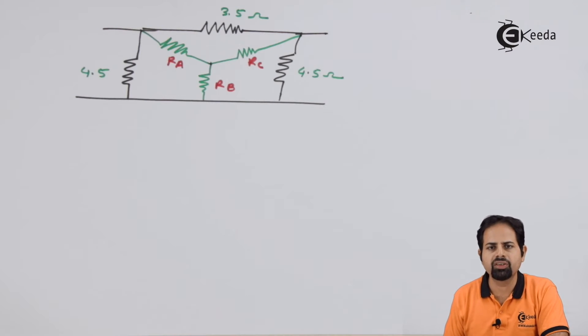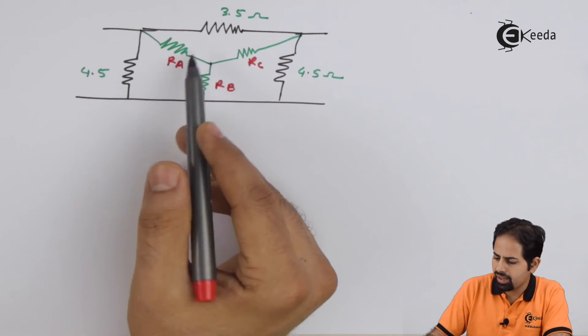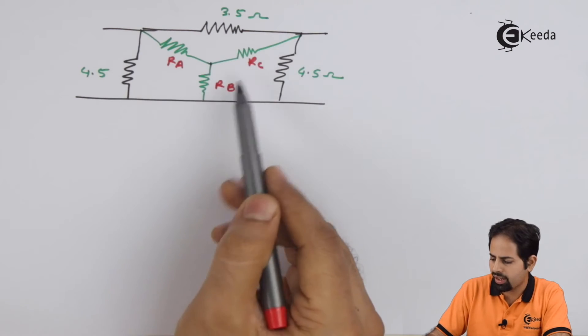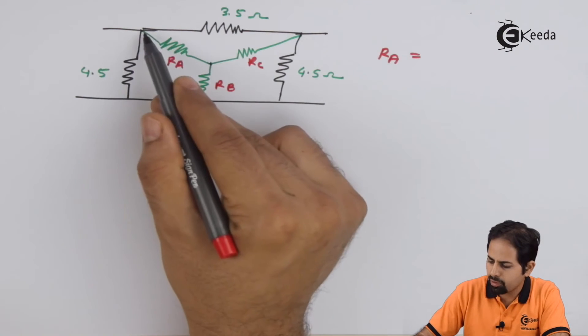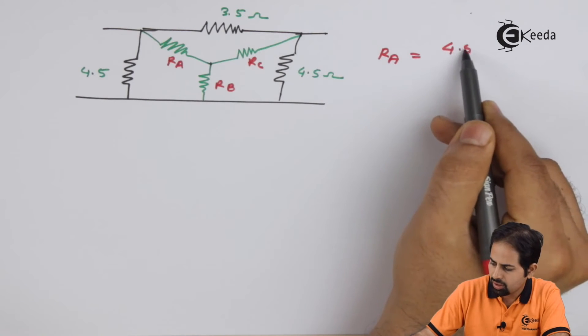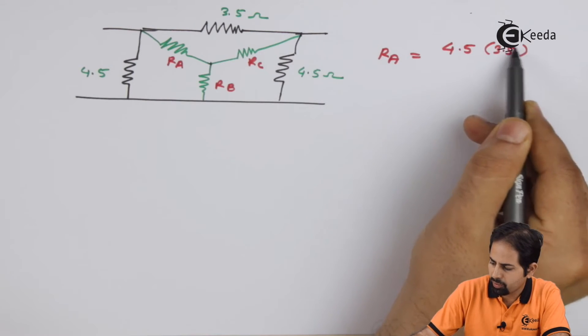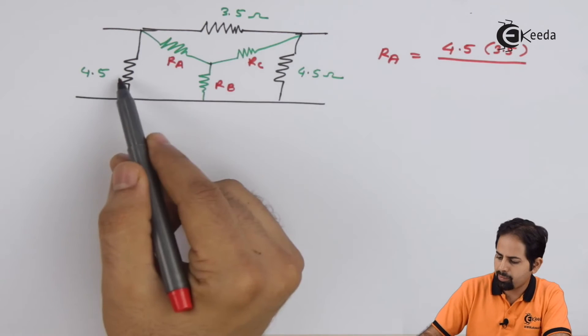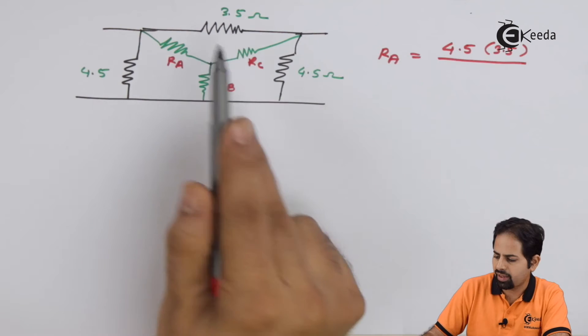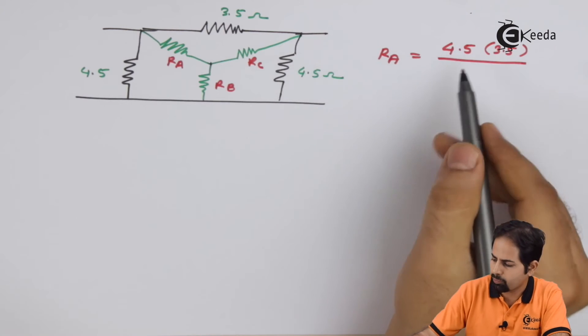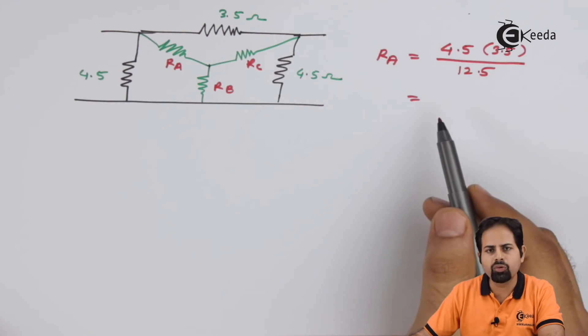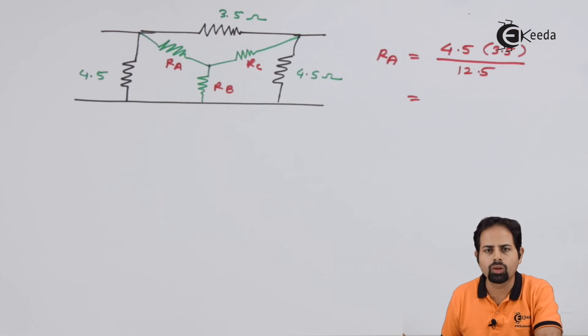Now, from basic knowledge, this Ra is nothing but equal to multiplication of these two resistances divided by total sum of Ra, Rb and Rc. So Ra will be connected between these two resistances, that means 4.5 into 3.5 divided by 4.5 plus 3.5 plus 4.5. So this is 9, 9 plus 3 is 12, that is 12.5. And if you calculate it, so this Ra value comes to be by calculation, 1.26.